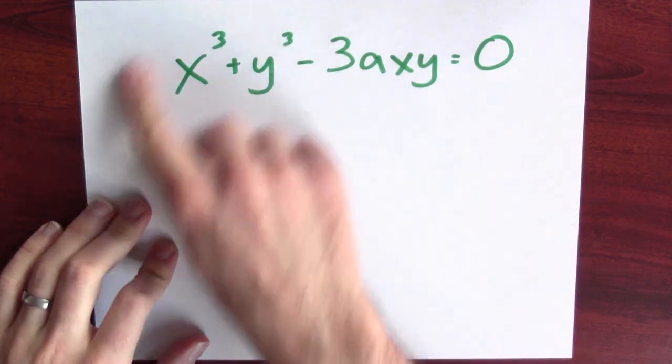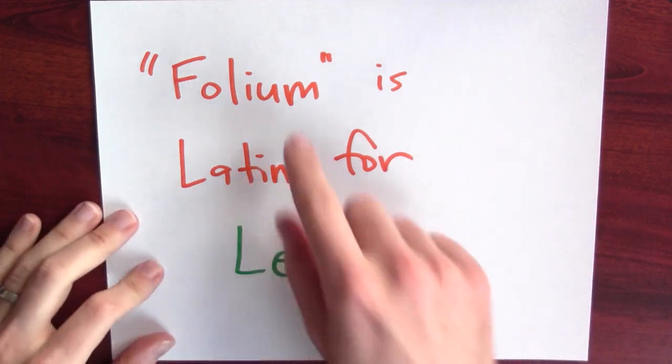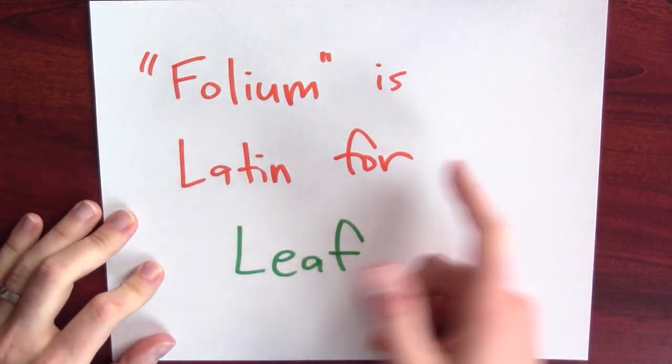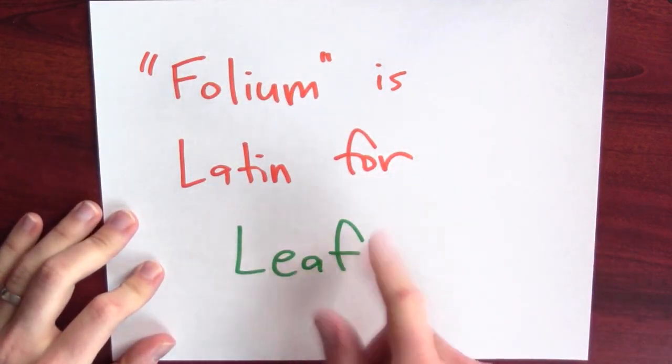It's the points in the plane that satisfy this equation. So what's a folium? Well, folium is just a Latin word for leaf, the sorts of things that grow on trees.